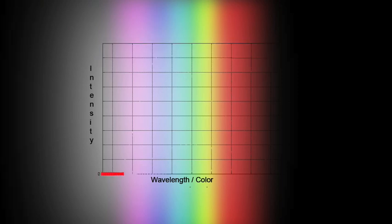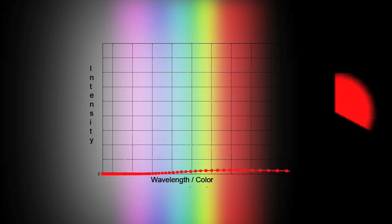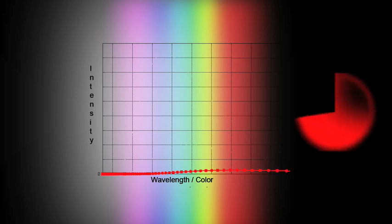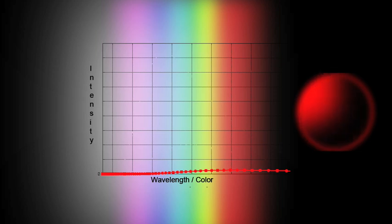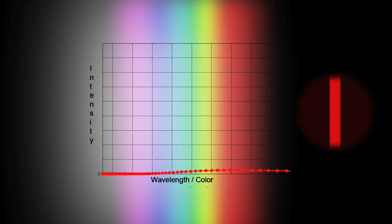This curve shows how much light of each color is emitted by a cool object. As you can see, there isn't much light, and what light there is mostly lies out past the red end of the spectrum, in the infrared. The figure on the right will show the different colors added together as we progress. Right now, only red light is visible.